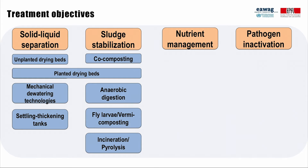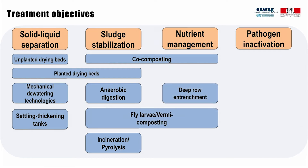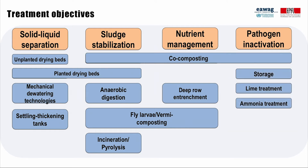Technologies for nutrient management can include co-composting, deep-row entrenchment, and fly larvae and vermicomposting. The appropriate level of inactivation of pathogens for the intended use of treatment products must always be a priority to protect public health. Co-composting, storage of dried sludge, lime and ammonia treatment, and incineration and pyrolysis are technologies that achieve high levels of pathogen inactivation.